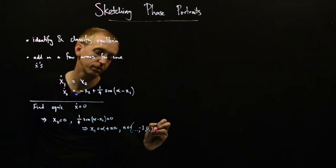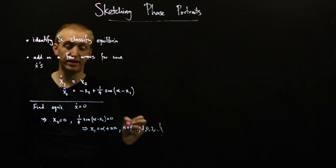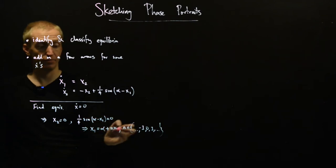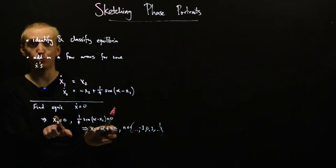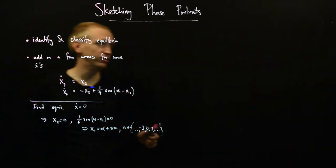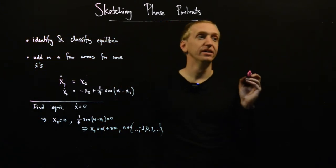Where n is some integer like minus one, zero, one, and so on. So for all of these values of n, we get a different equilibrium point. So we have actually an infinite number of equilibrium points. We'll just sketch on a few on our phase portrait.